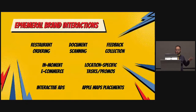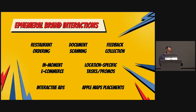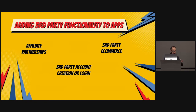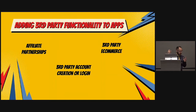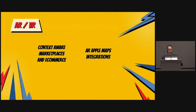That's just a couple of examples. But let's look at what else we could do. App Clips are really great for ephemeral brand interactions: restaurant ordering, document scanning, feedback collection, in-moment e-commerce, location-specific tasks, some promos, interactive ads, Apple Maps placements. Another big use case is third-party functionality — if you work with a partner and that partner experience needs users to register, you don't want to send people to the App Store because you know they'll never come back. But if you can integrate an app clip, that user can return right to your app. Great for third-party account creation and logins. And AR and VR — context-aware marketplaces, Apple Maps integrations — I think it's going to be really big.